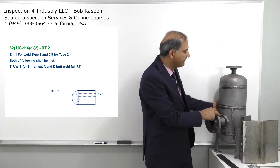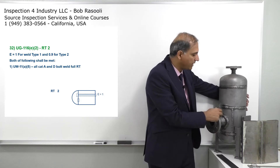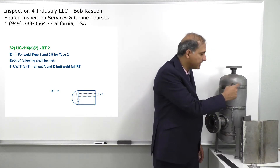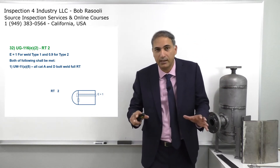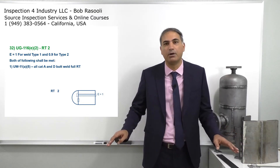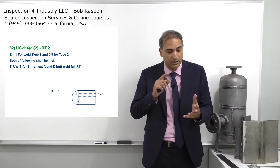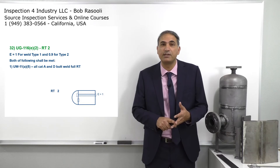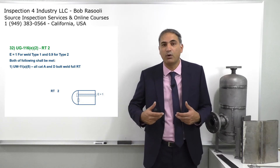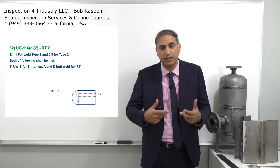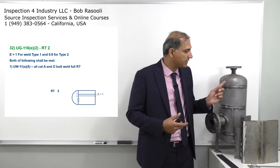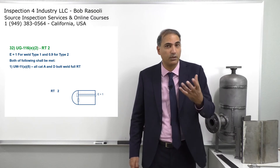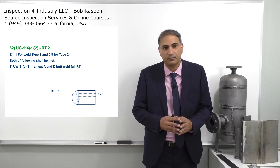So they take the radiography for all long seams — one in the front, one in the back — and take some spot on the circumferential joints. This is the bonus: it doesn't say take full radiography on the circumferential, just spot, and then you can put joint efficiency 1 in the design formula. This happens when it is neither lethal service nor does the wall thickness and material combination fall under UCS-57. The manufacturer voluntarily wants to do full radiography on long seams and spot on circumferential joints, and the code gives the bonus, allowing joint efficiency 1 and a lower wall thickness.